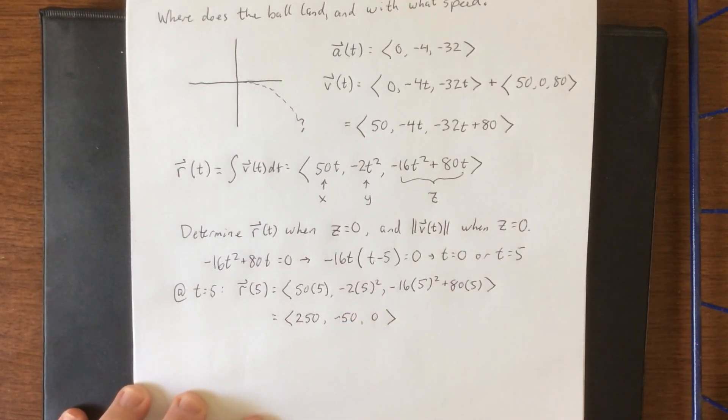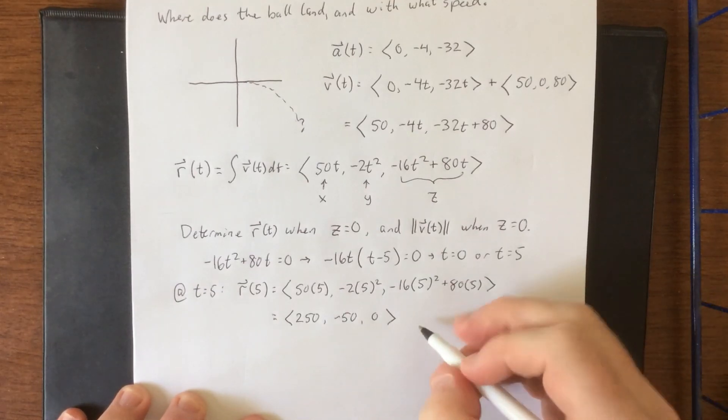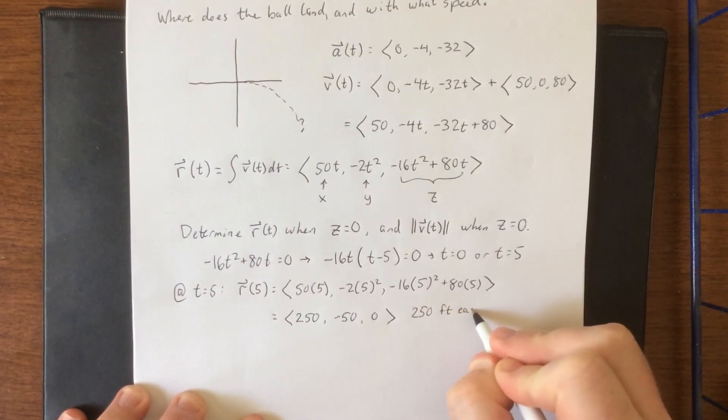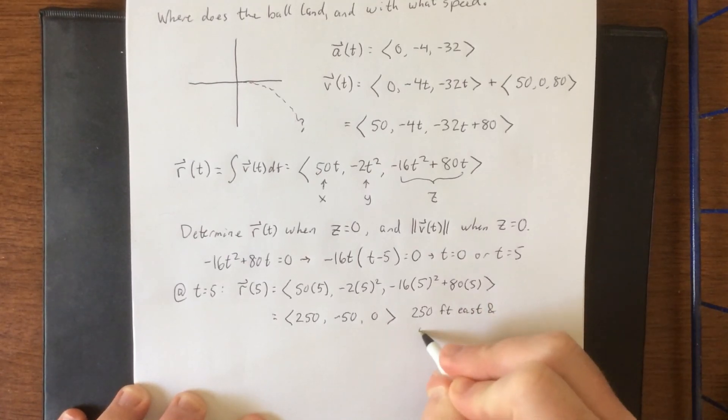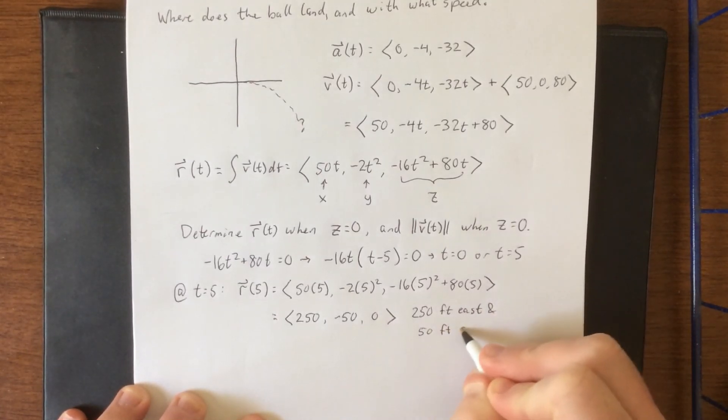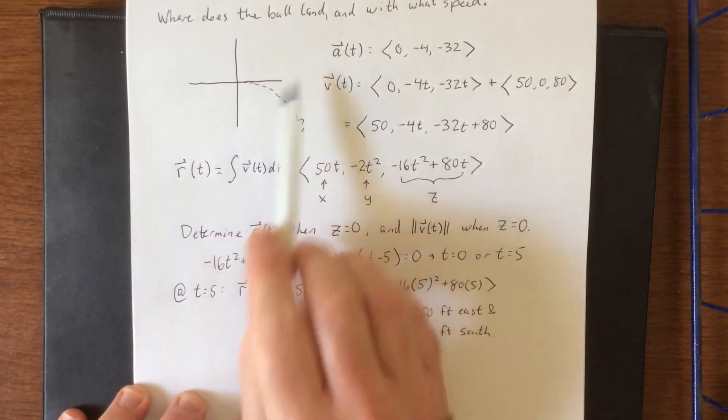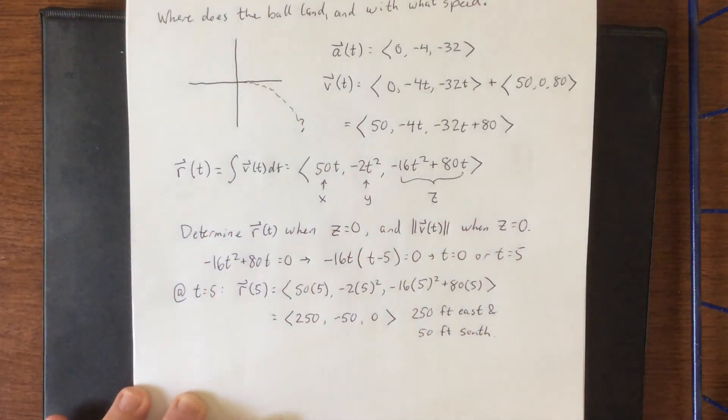I suppose if we wanted to interpret this we could say it's 250 feet east and 50 feet south from the initial position, assuming that the x direction is your east versus west and your y direction is your north versus south. So the positive x is what's taking us to the east and the negative y is what's taking us in the southerly direction.